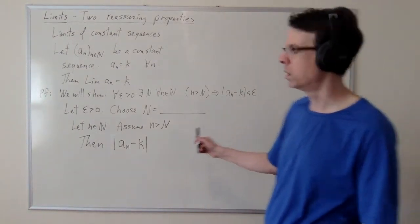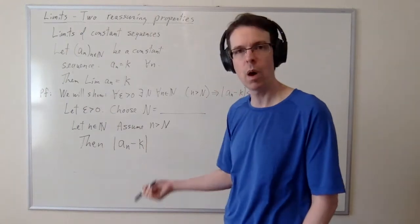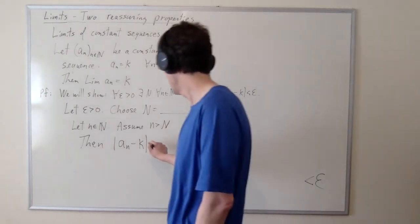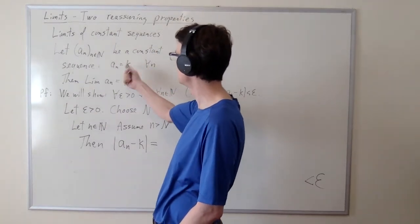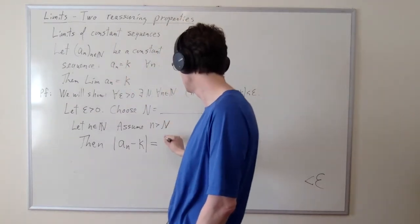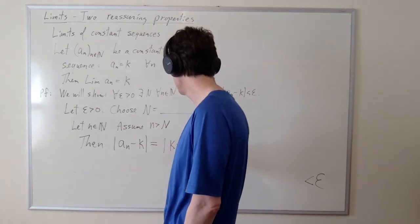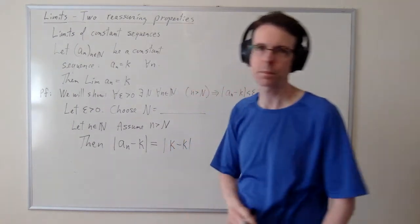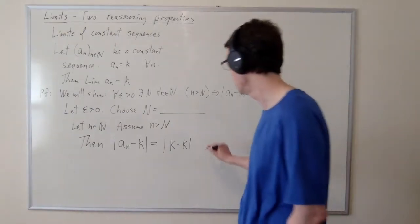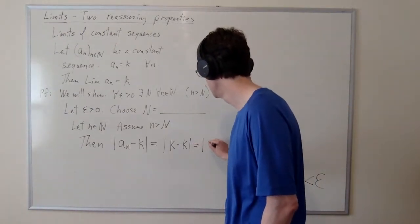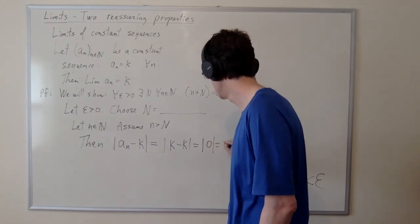So let's go in and substitute what we know and then do any obvious algebra. |a_n - k|, what is a_n? We have a formula for a_n. Because this is a really silly constant sequence, a_n is always equal to k. And so this is |k - k|, which is looking like it's not going to be very complicated algebra, which is |0|, which is zero.